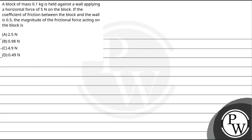Hello, let us read this question. The question says, A block of mass 0.1 kg is held against a wall applying a horizontal force of 5 N on the block. If the coefficient of friction between the block and the wall is 0.5, the magnitude of the frictional force acting on the block is.